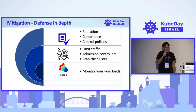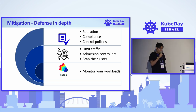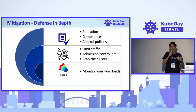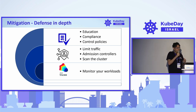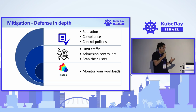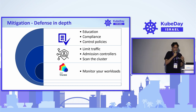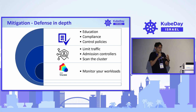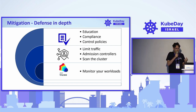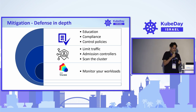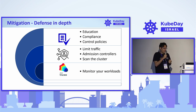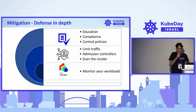To summarize the mitigations: Aqua Security believes in defense in depth, meaning security should be handled in layers. Start with education — learn what attackers are doing and the implications of misconfigurations. Use compliance and control policies. Limit traffic: there are many exposed API servers out there, so restrict access to API servers and other significant components. Use admission controls, scan your clusters, and monitor your workloads.